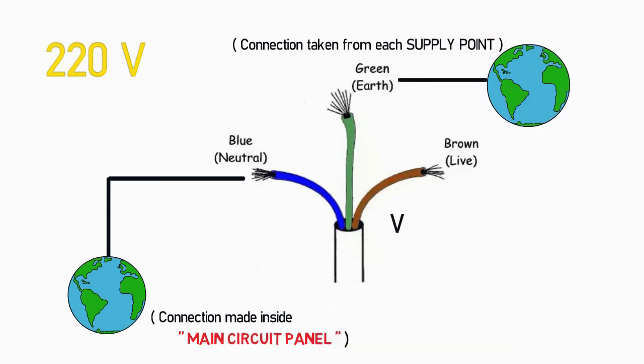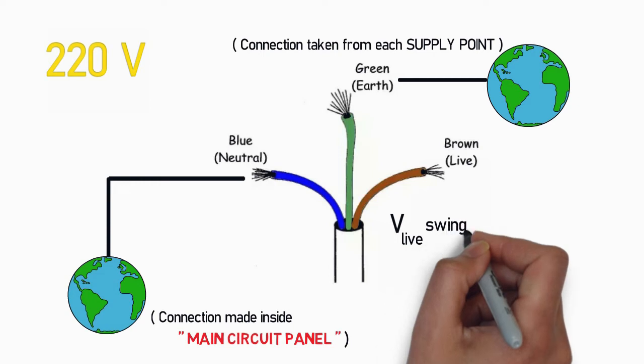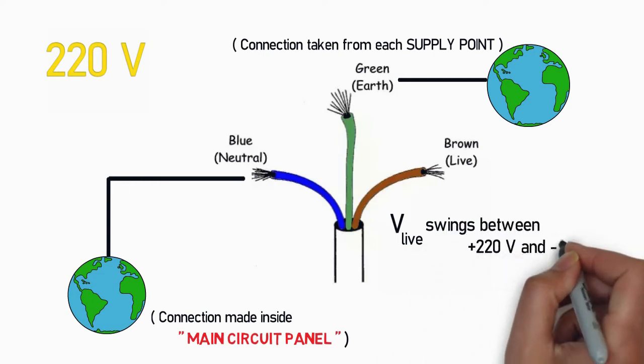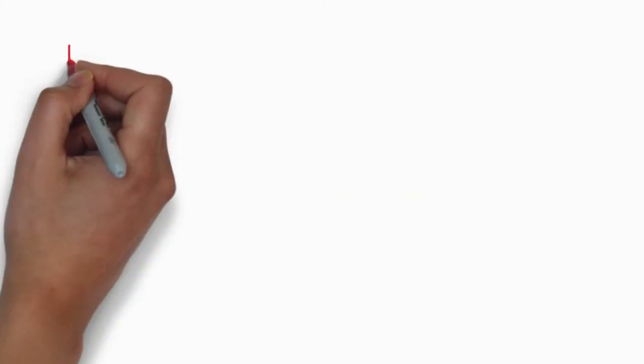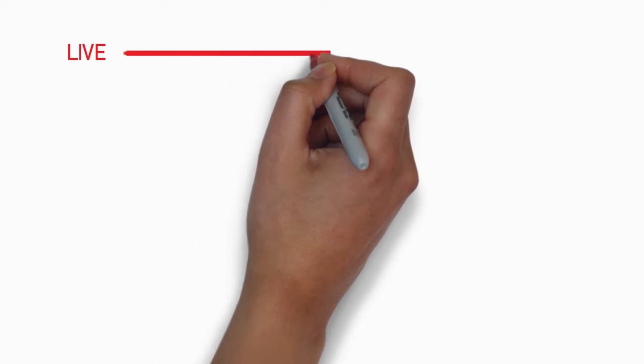Now the remaining wire which is referred to as live wire is maintained at an oscillating voltage swinging between plus 220 volt and minus 220 volt with respect to earth. To make these concepts much more clear let us take the scenario where humans get an electric shock from these domestic supplies.